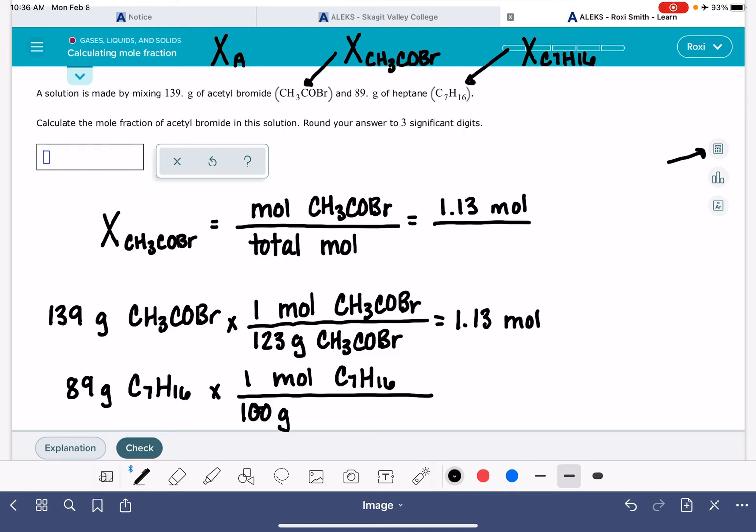89 grams of C7H16, approximately 100 grams per mole. Again, don't use these numbers. 89 divided by 100 is 0.89 moles. So we need the total number of moles, both of these together. 1.13 plus 0.89 is a total number of 2.02 moles.